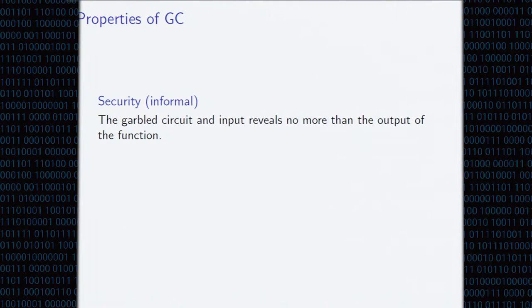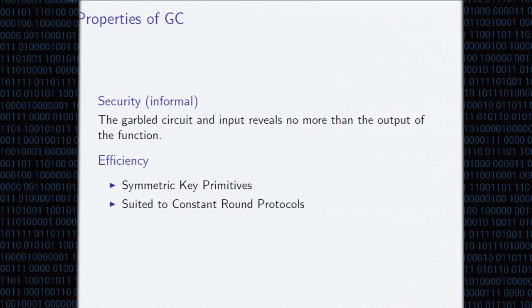So what are the properties of garbled circuits? Informally, given a garbled circuit and a garbled input, it shouldn't reveal anything more than the output of the function that we're encoding. And why do we care about them? They tend to be very efficient. They only use symmetric key primitives. And they're sort of naturally suited to generate constant round protocols because you garble the circuit in one shot and then you use oblivious transfer to send the garbled input.